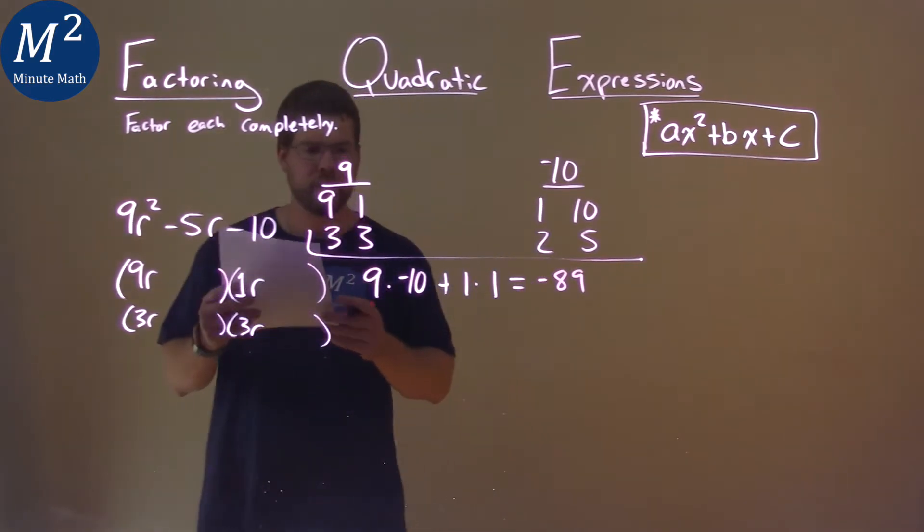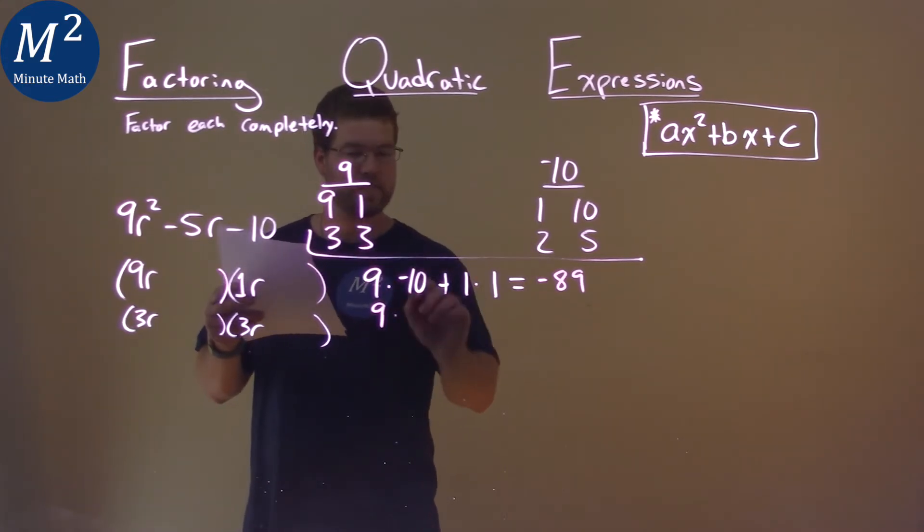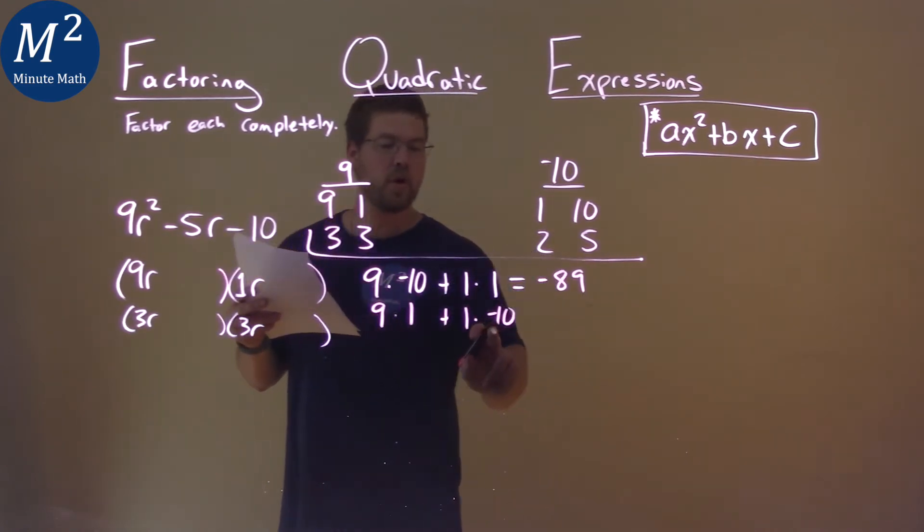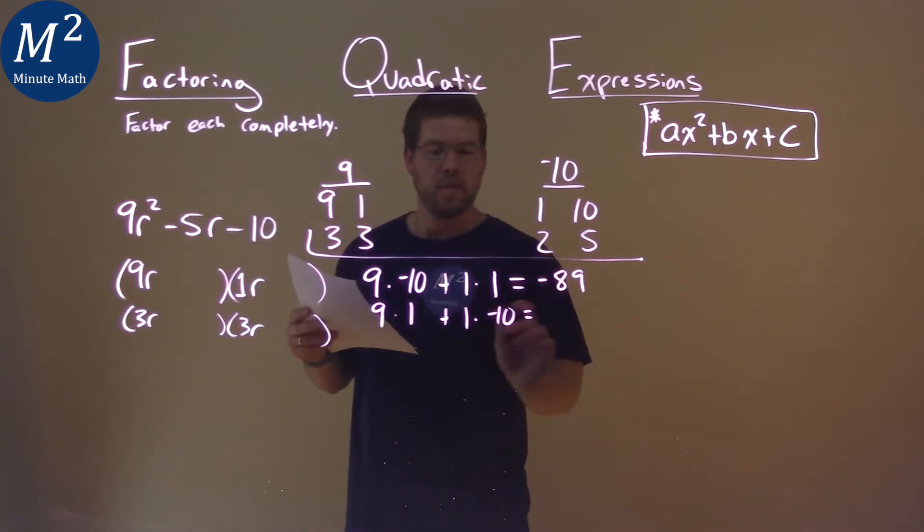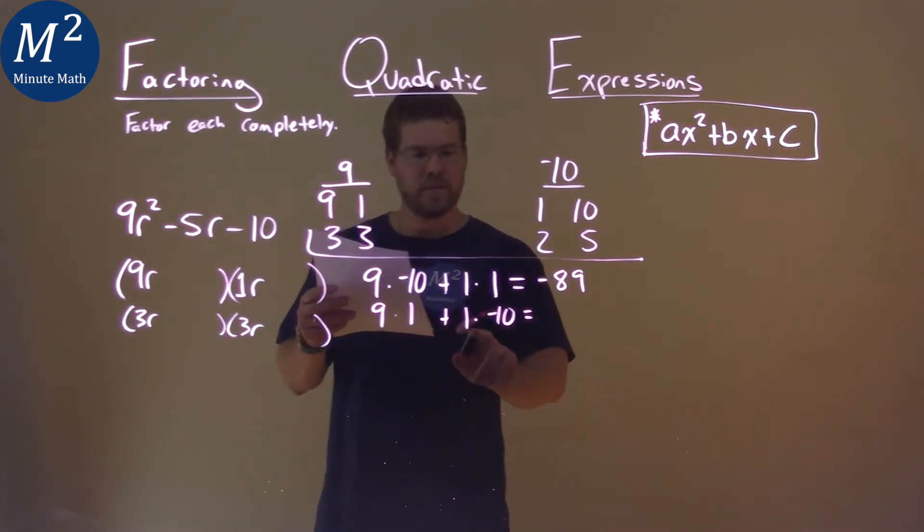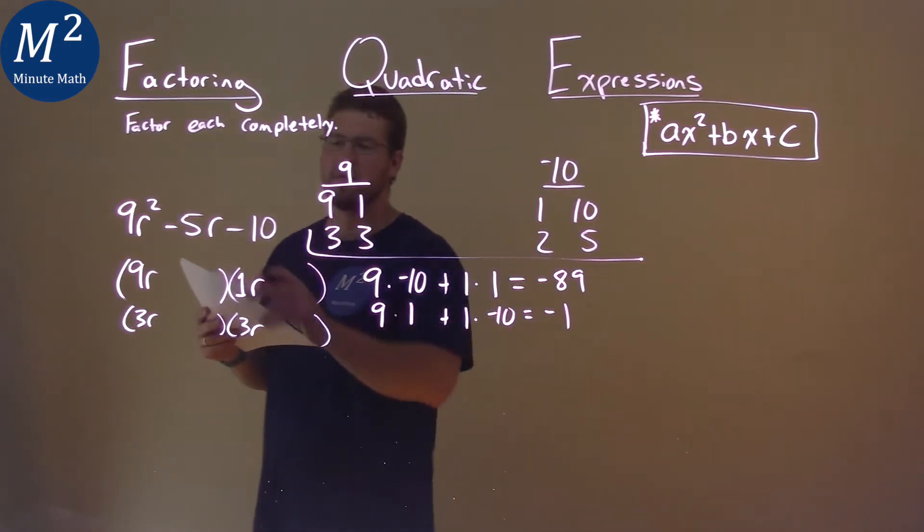Let's try another one. If we do 9 times this one right here, plus 1 times this -10, we still have the larger of the two pairs - the negative here will be larger. But testing that out, 9×1 + 1×(-10) is -1. That's not equal to -5.